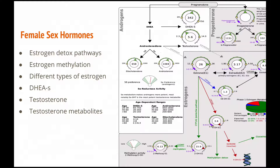The female sex hormones are broken down in a lot more detail on this page. When you first look at this it might look like a different language, but once you understand the basics the test is quite easy to understand. The first thing I'll look at is the different types of estrogen. You've got estradiol, which is the strongest of the estrogens, estrone and estriol, and then down here we've got the three different pathways where estrogen can be detoxified. Ideally we want to go down the green pathway, the two-hydroxy estrogen. We don't want to see high levels going down the four-hydroxy pathway because that can be leading to DNA damage and estrogen can be associated with cystic breasts, breast cancer, fibroids, and ovarian cancer.